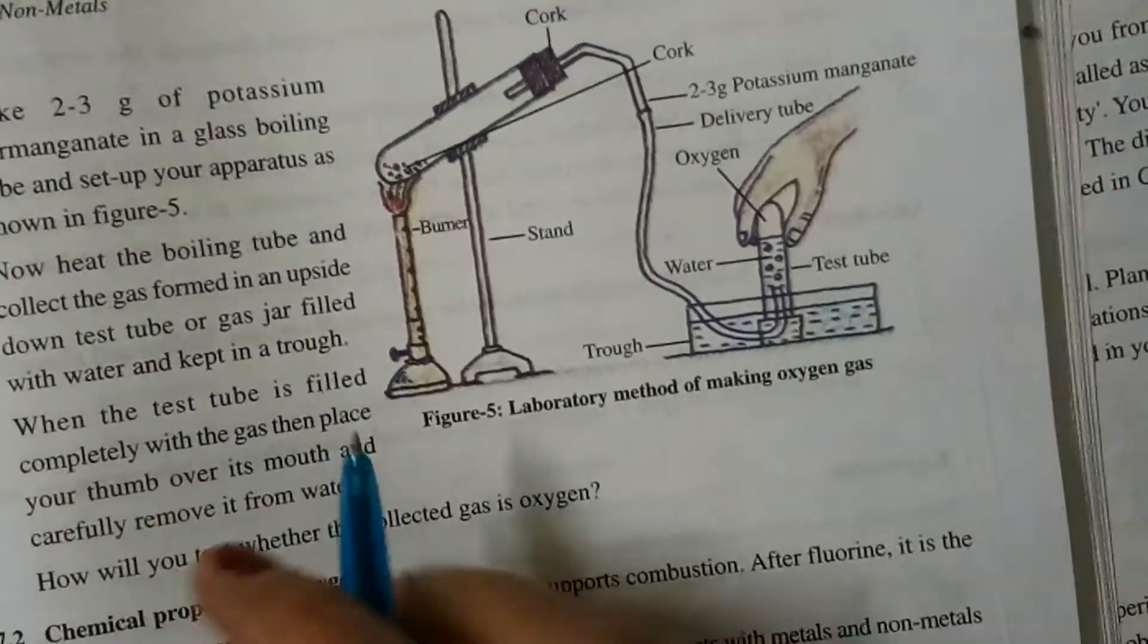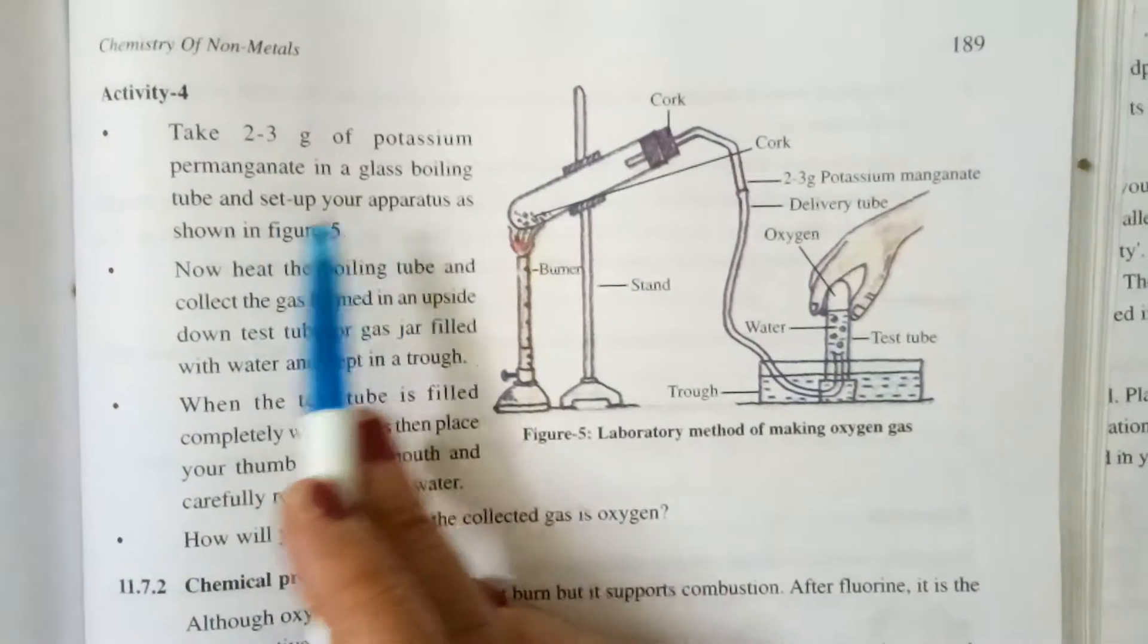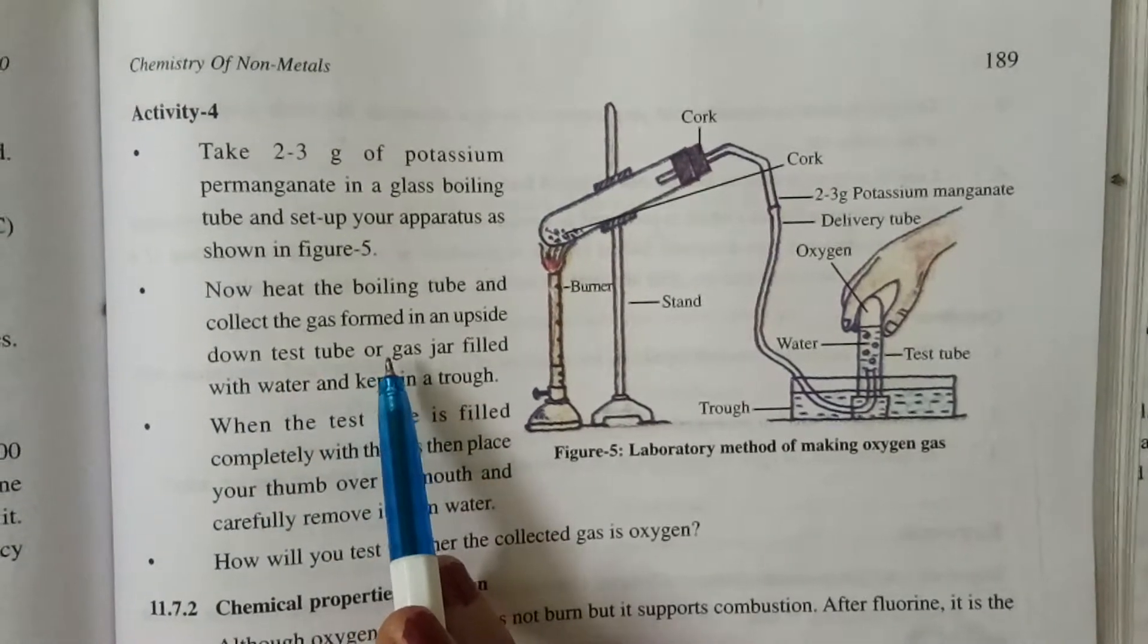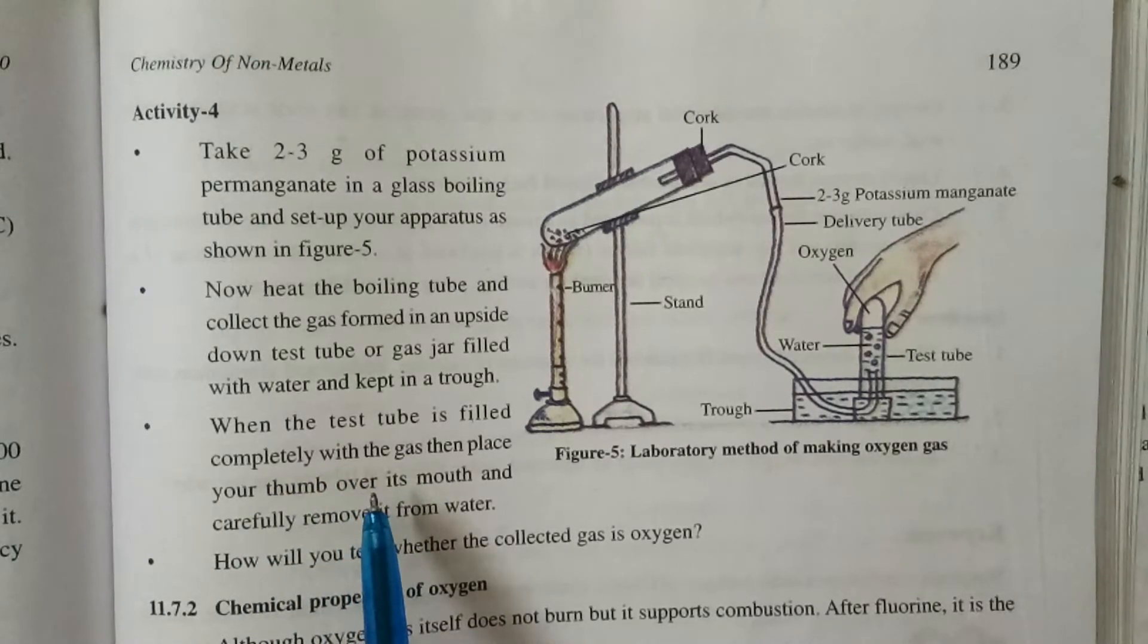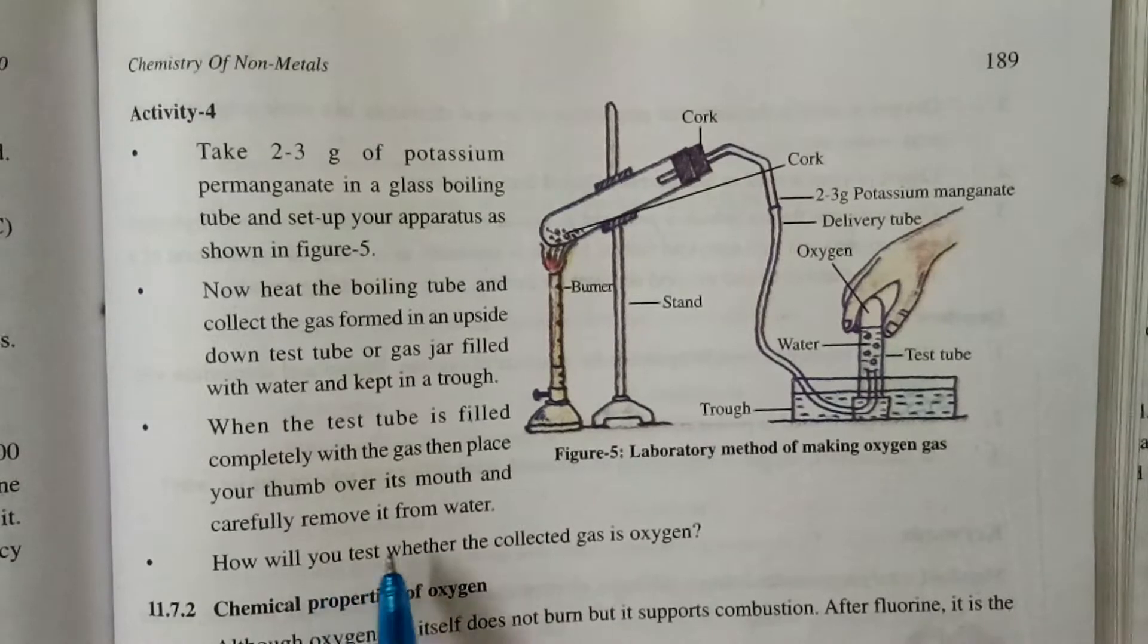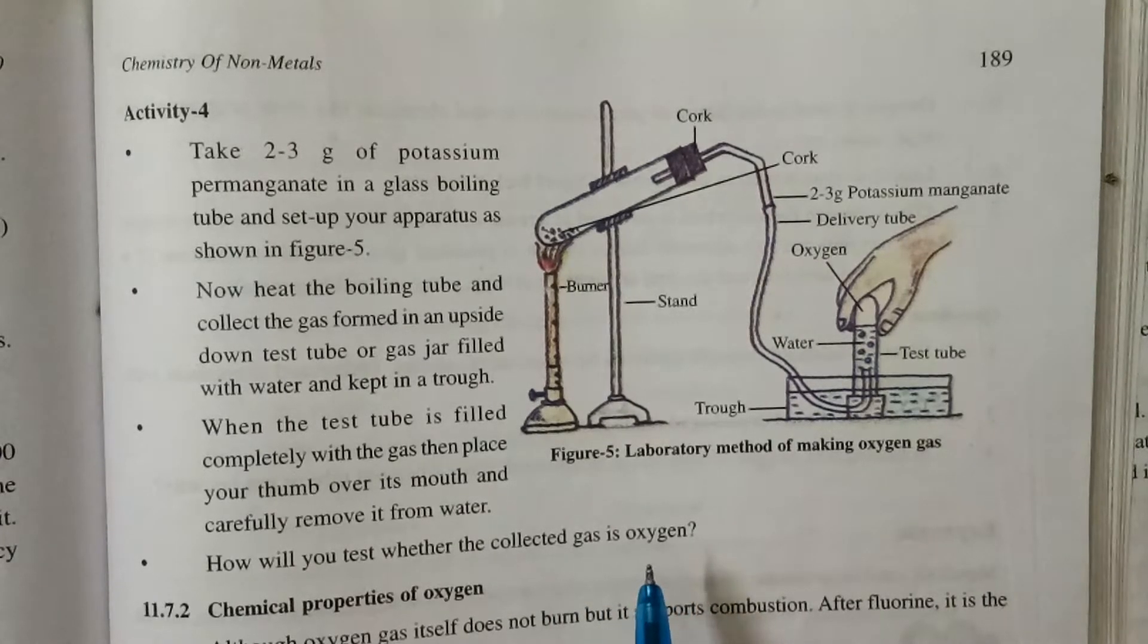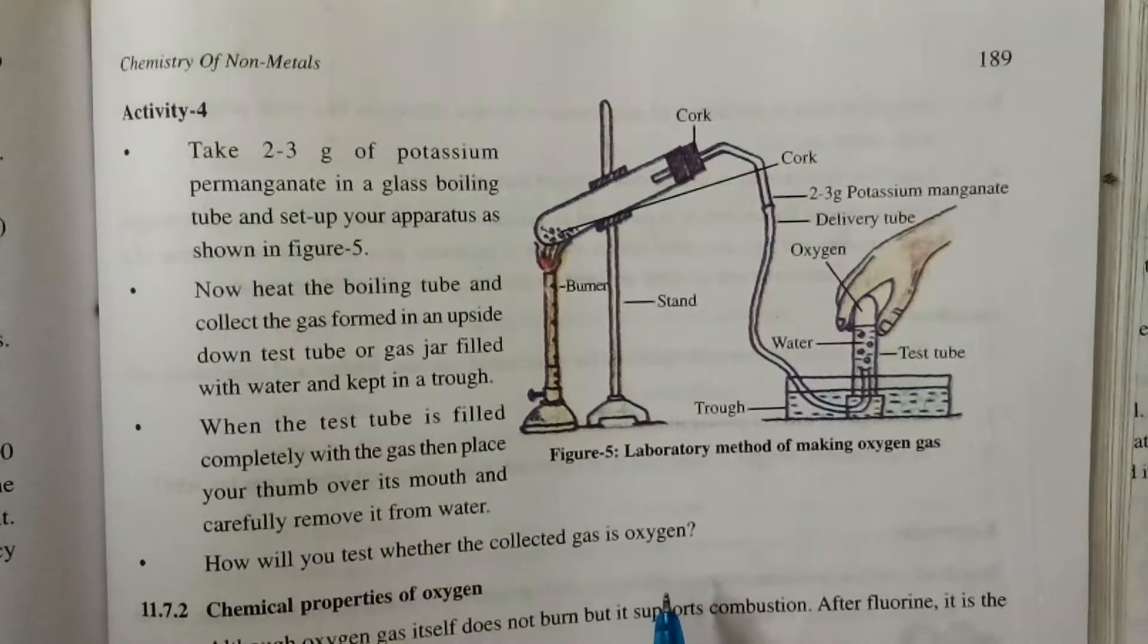To prepare oxygen gas in laboratory, we have to arrange the apparatus as shown in the diagram. And we have to take 2 to 3 grams of potassium permanganate in a glass boiling tube. And now this boiling tube is heated. A gas is formed and which is collected by the downward displacement of water. When the test tube is filled completely with the gas, then place your thumb over the mouth of the test tube and carefully remove it from the water. When a lighted match stick is taken at the mouth of test tube, then this match sticks started burning vigorously. This shows that the gas collected helps in combustion.